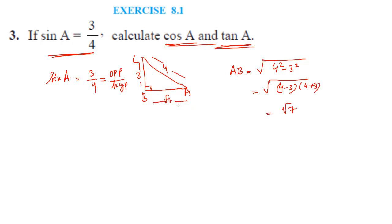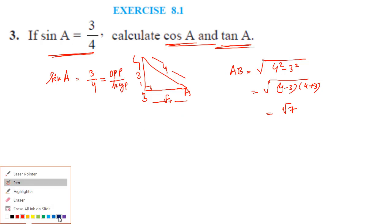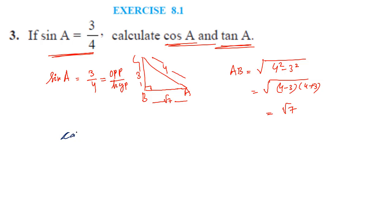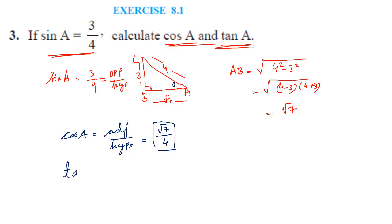So this side is root 7. The question asks for cos A and tan A. Cos is adjacent divided by hypotenuse — the adjacent side with respect to angle A is root 7 and hypotenuse is 4, so cos A = root 7 by 4. Tan A is opposite divided by adjacent, so 3 by root 7. That's question 3.